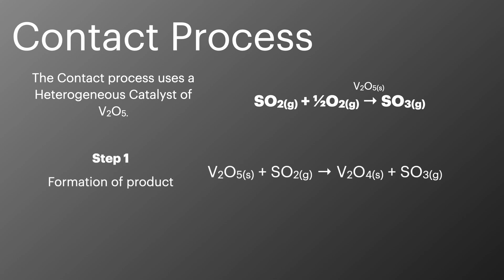In step 1 the vanadium oxide reacts with the sulfur dioxide to form sulfur trioxide. This shows the importance of variable oxidation states for the catalyst, as vanadium goes from +5 to +4. In step 2 the vanadium oxide reacts with oxygen to regenerate the catalyst so it can be used again.